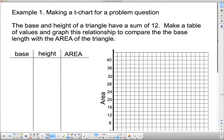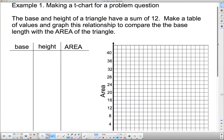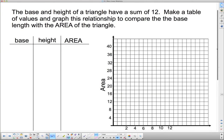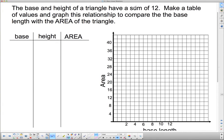So let's have a look at if I can make a t-chart for an example. And then graph it to see if it's linear or nonlinear. Making a t-chart for a problem question. The base and height of a triangle have a sum of 12. Make a table of values and graph this relation to compare the base length with the area of the triangle. Now we do need to remember that to find the area of the triangle, we take the base, multiply it by the height, and divide it by 2.